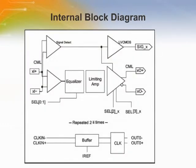The internal block diagram of the PI2-EQX44 family redriver shows that a low-level input signal detection and output squelch function is provided for all channels. Each channel operates fully independently. When a channel is enabled and operating, that channel's input signal level determines whether the output is enabled. If the input level falls below the active threshold, the output driver switches off and the pin is pulled to VDD via a high-impedance resistor.